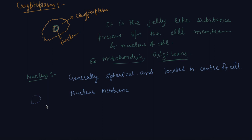With a microscope of higher magnification, we can see a smaller spherical body in the nucleus called the nucleolus. In addition, the nucleus contains thread-like structures called chromosomes.